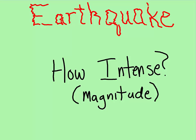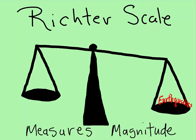One last way that we're going to cover where logarithms and exponentials are used: how intense an earthquake is. The intensity is called magnitude. We have what's called the Richter scale, named for the guy who came up with this. It's a way to measure the intensity of an earthquake.